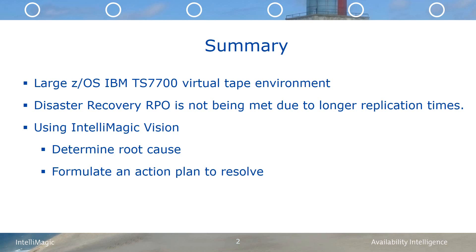The customer in this case study was a large ZOS IBM TS7700 tape user. While using Intellimagic Vision, he realized that his tape data was not getting replicated to his DR site in the timely manner specified in its service level agreements, or SLAs. His recovery point objective, or RPO, was not being met due to the replication taking longer than expected. We will see how Intellimagic Vision was used to examine this issue and subsequently determine the causes and possible action plans to eliminate or lessen the impact.